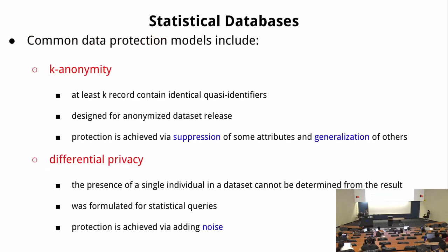Two more important approaches: k-anonymity, proposed about 15 years ago, ensures that at least k records contain identical quasi-identifiers, making it hard to identify which record belongs to which individual. The other is differential privacy, still a very hot research area with a lot of mathematical foundations and many deployed systems.